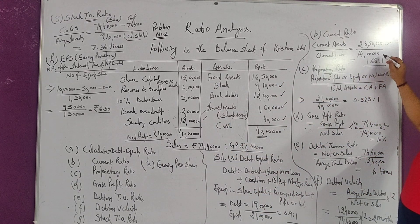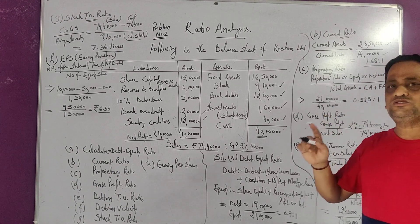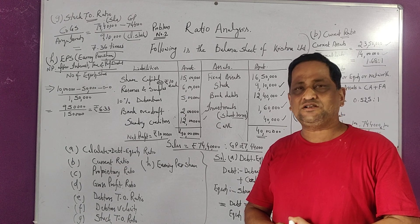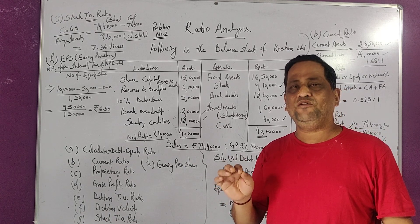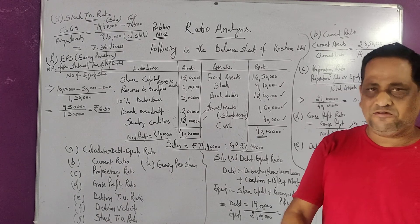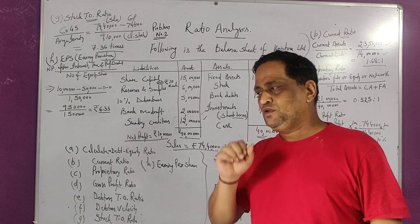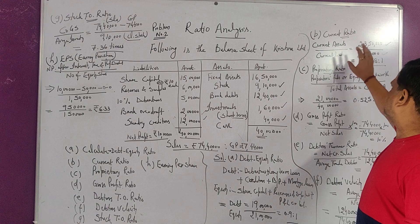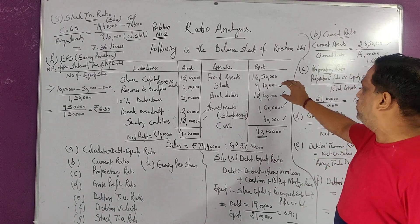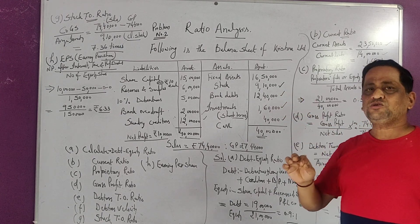Our current liability will be 14 lakh. So if we look at the ratio, the answer will be 1.68 is to 1. This means we have 1.68 of current assets as compared to 1.00 of liability. If we comment on this, the ratio may not be said as satisfactory because the norm is 2 is to 1. There should be more current assets so that the ratio reaches the standard of 2 is to 1.